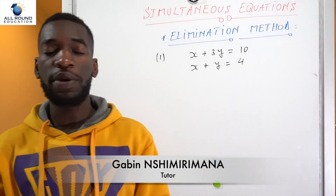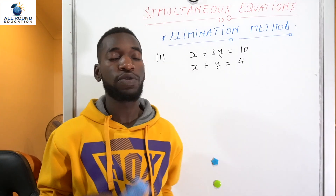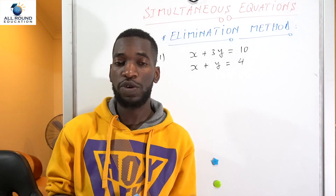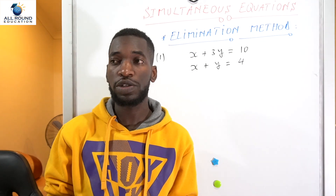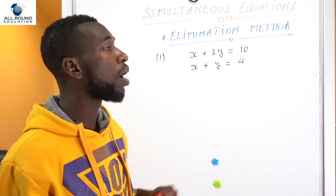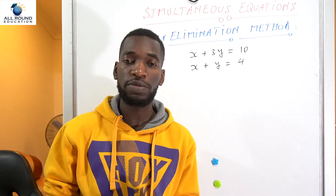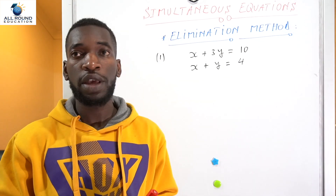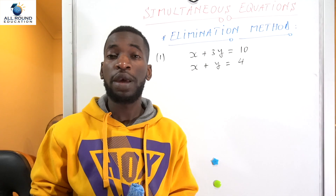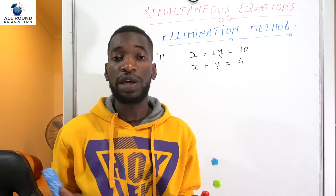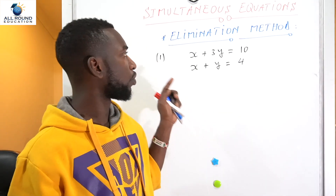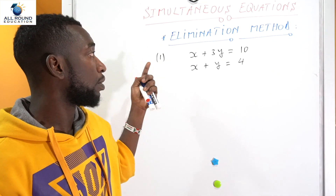Hey guys, this is Gabin once again, and today we'll be working on simultaneous equations. It's equations — not equation — because we are solving two equations at the same time, trying to find the value of both x and y simultaneously. There are a few ways to do it, but today we'll be looking at the elimination method. The idea of the elimination method is we are trying to eliminate one variable and find the other value.